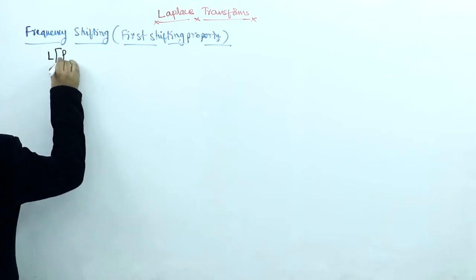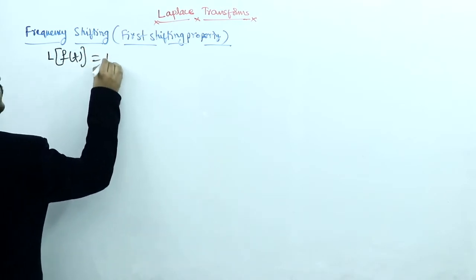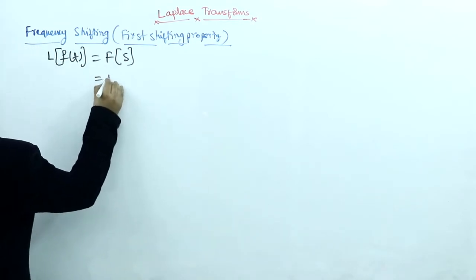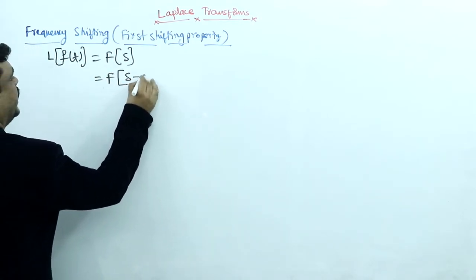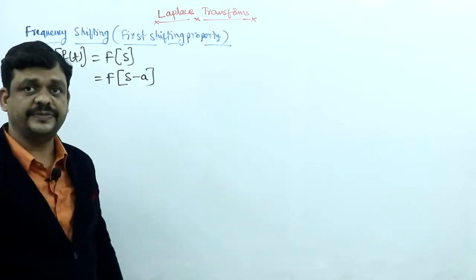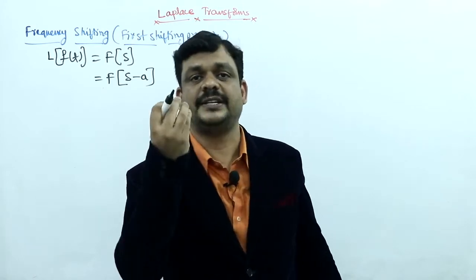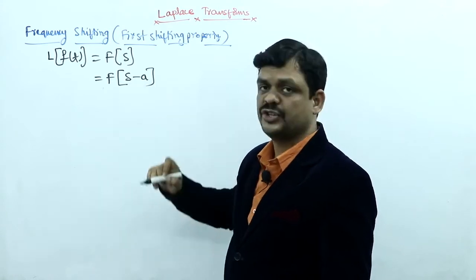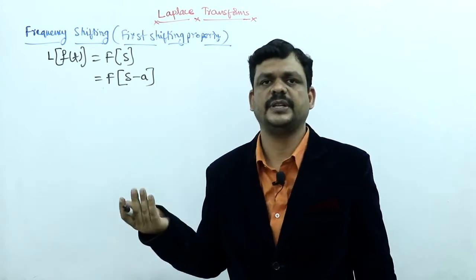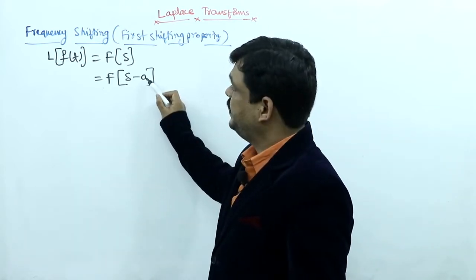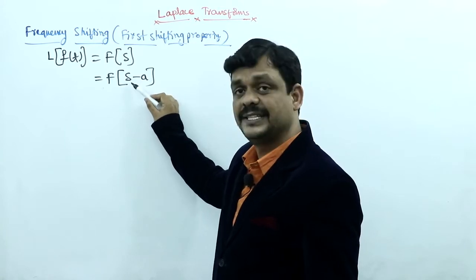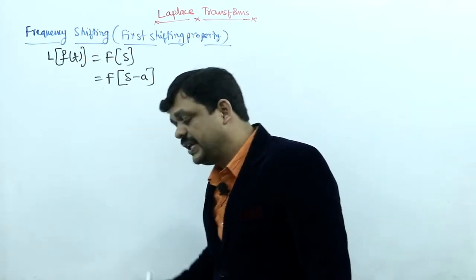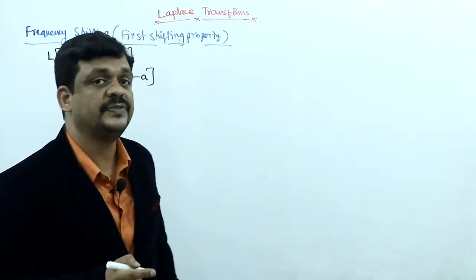The Laplace transform of f(t) is F(s) — time domain is converted into the frequency domain. Now, if I want to perform shifting in the frequency domain, we write F(s - a). Shifting is the algebraic addition of some constant with the term; here the constant value is 'a', which performs a subtraction operation. We can also write it as a plus operation depending on left shift or right shift. Since 's' is the frequency, this is called the frequency shifting property.